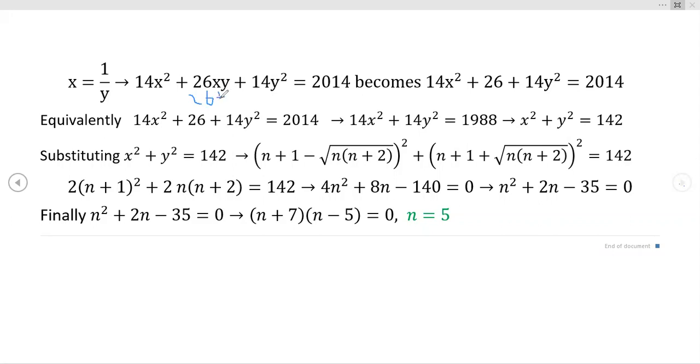Hope that's readable folks, I'm kind of cramped in here. x times y—again x is equal to 1 over y—you could have done it the other way. These cancel and that's where this 26 comes from right here, this 26.